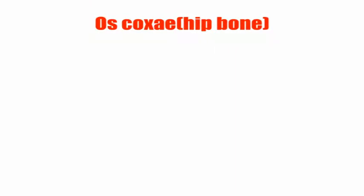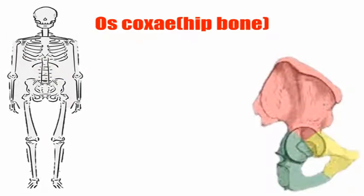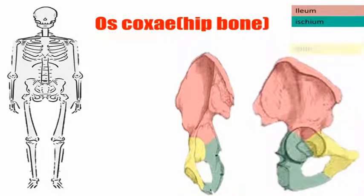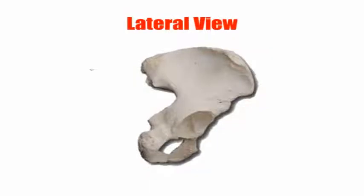The first bone is the os coxae, which is also called the hip bone. The hip bone is divided into three main parts: the ilium, the ischium, and the pubis. Now we will learn about each part of the hip bone.